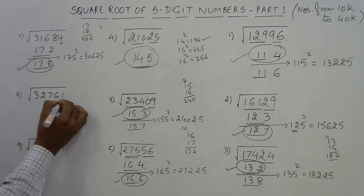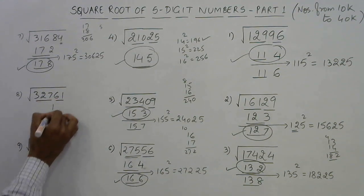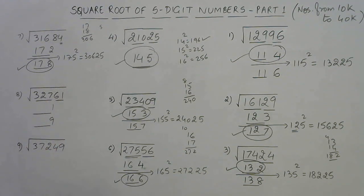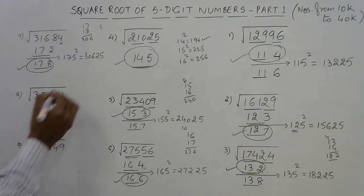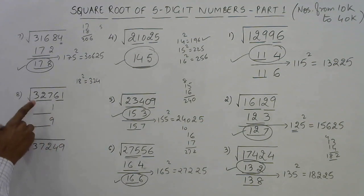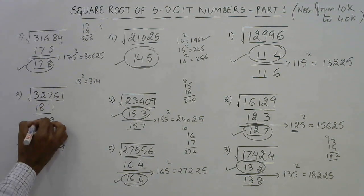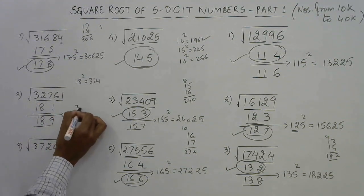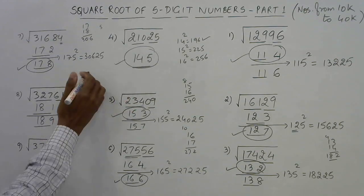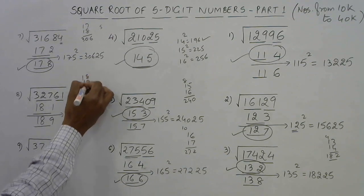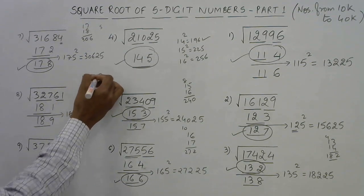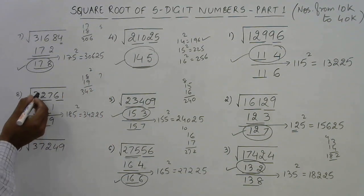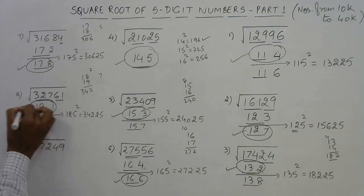The next one ends with 1. When a number ends with 1, our answer either ends with 1 or ends with 9, because 1 times 1 is 1 and 9 times 9 is 81, both ending with 1. The triplet is 327. 18 squared is 324, which is just below 327, so it has to be 18 here. The answer is either 181 or 189. Take the intermediate number 185 squared. 18 multiplied by 19 is 342, followed by 25, giving 34225. The original number is smaller than 34225, so our answer is the smaller one — 181.